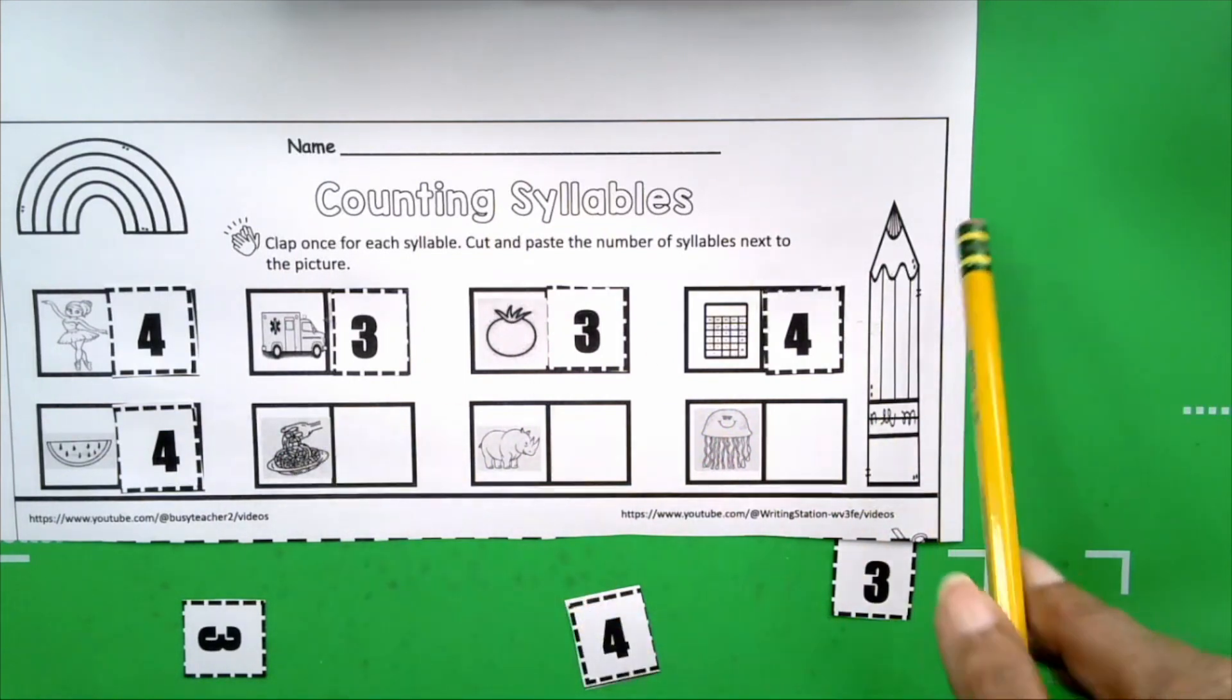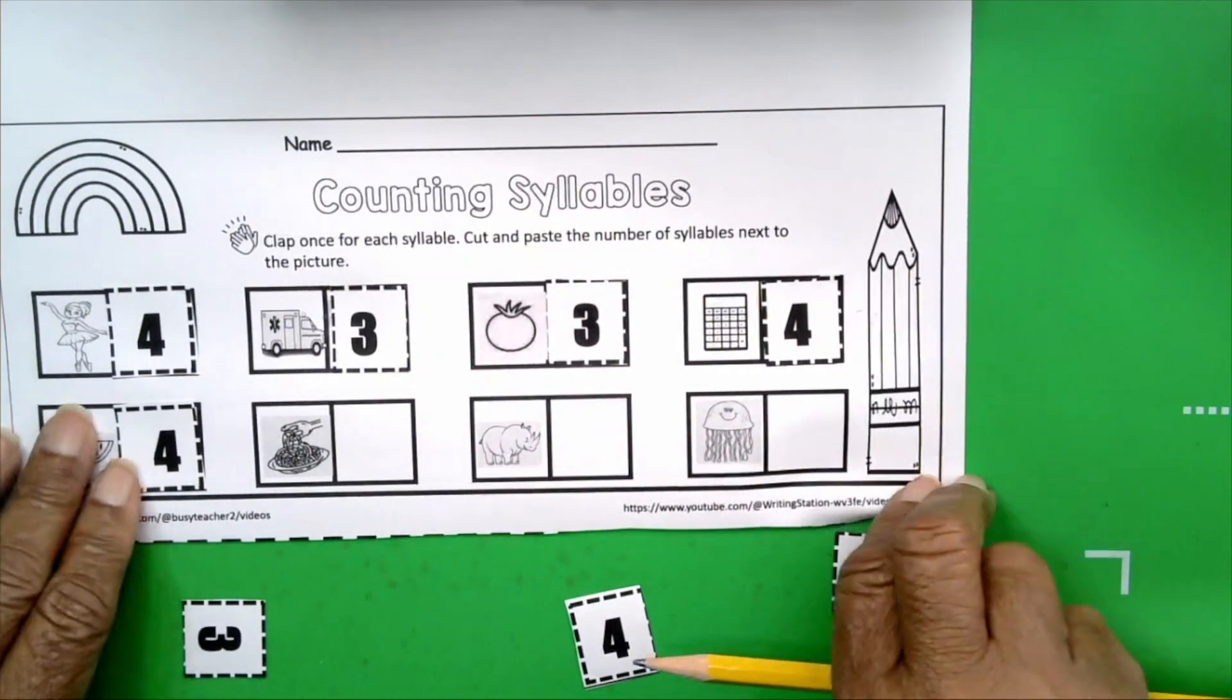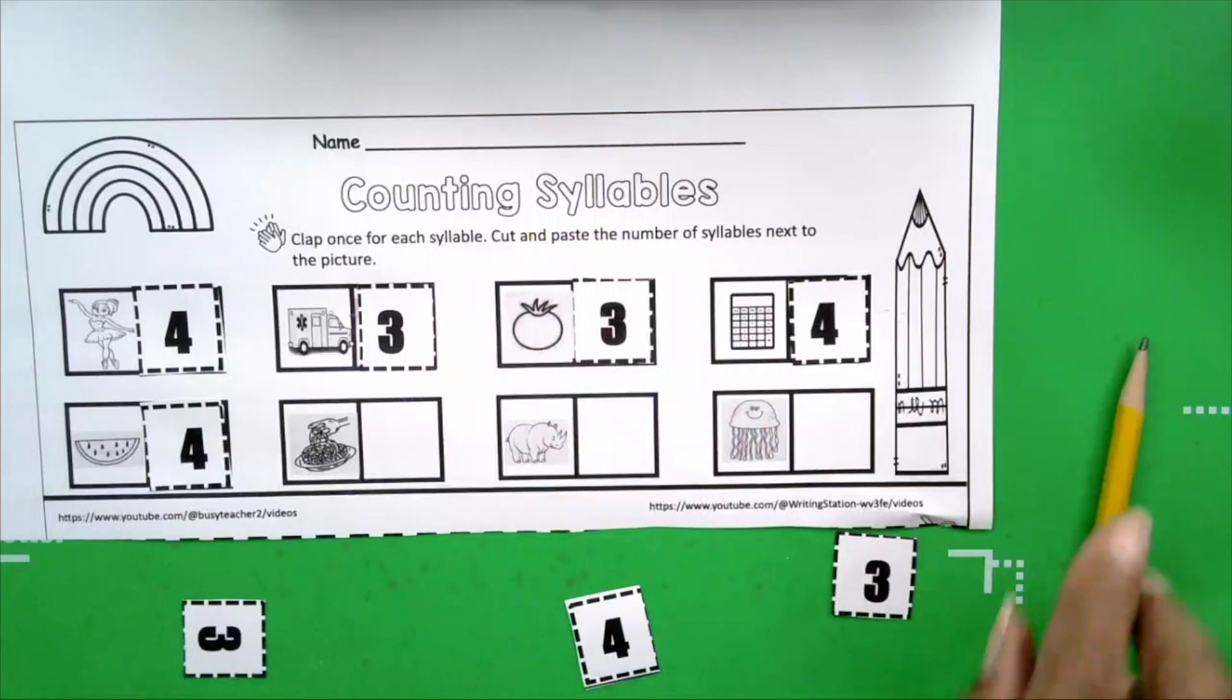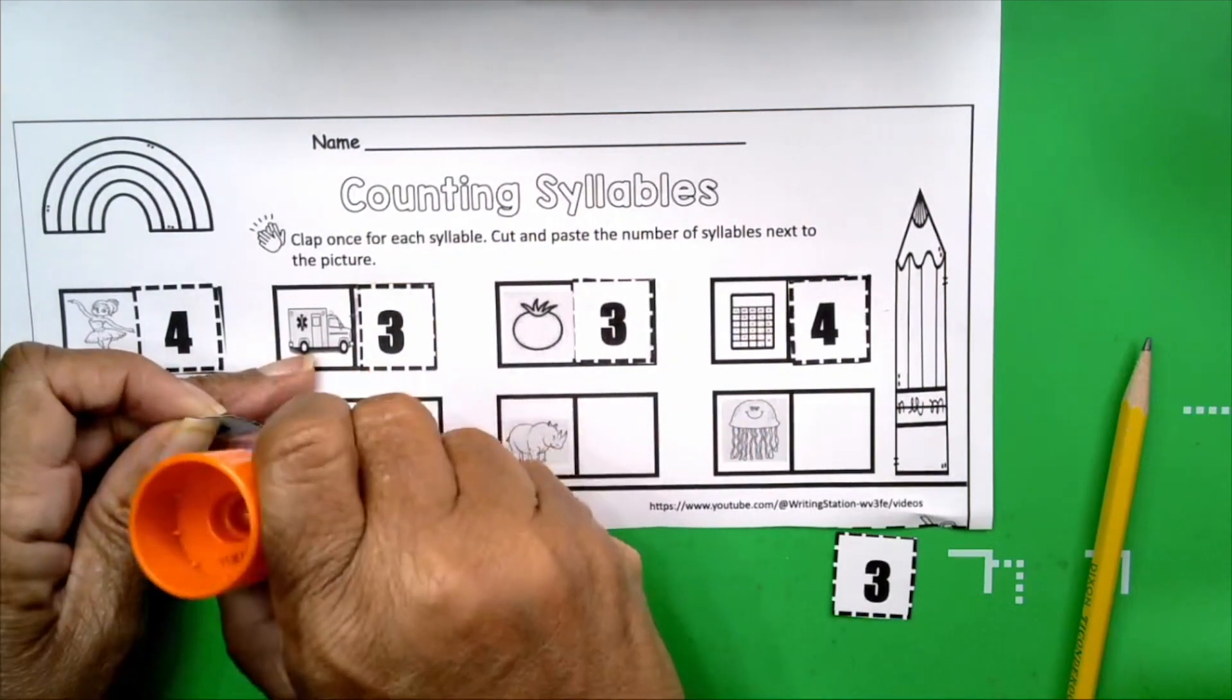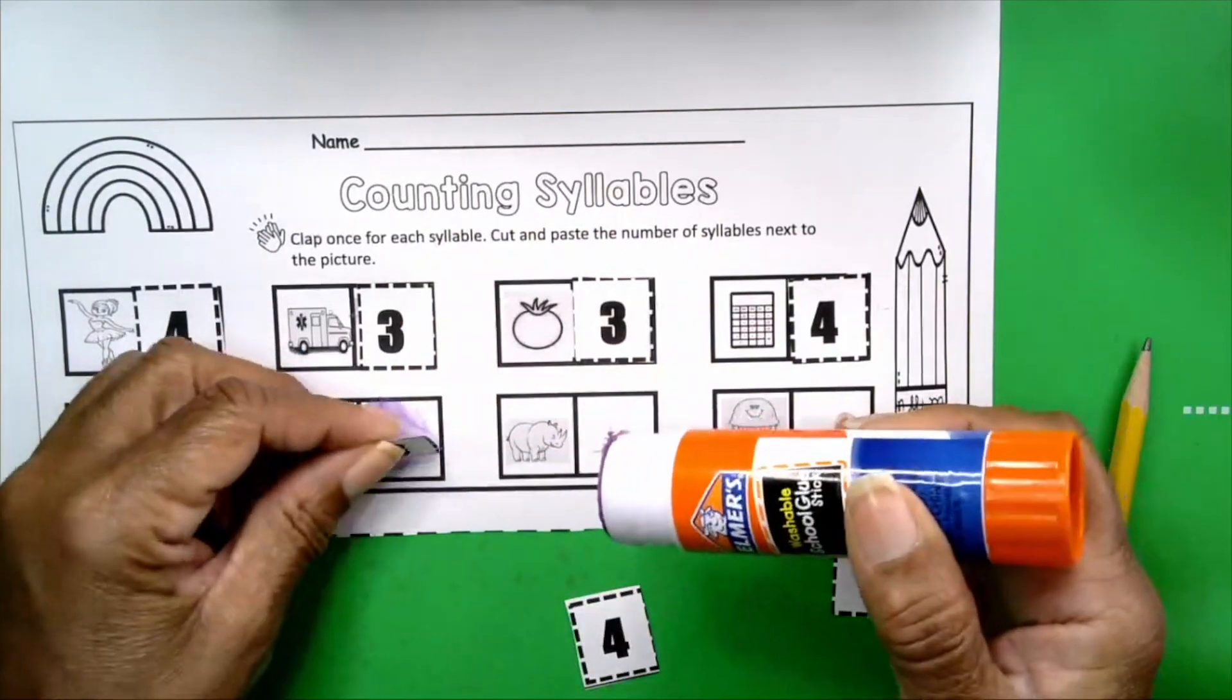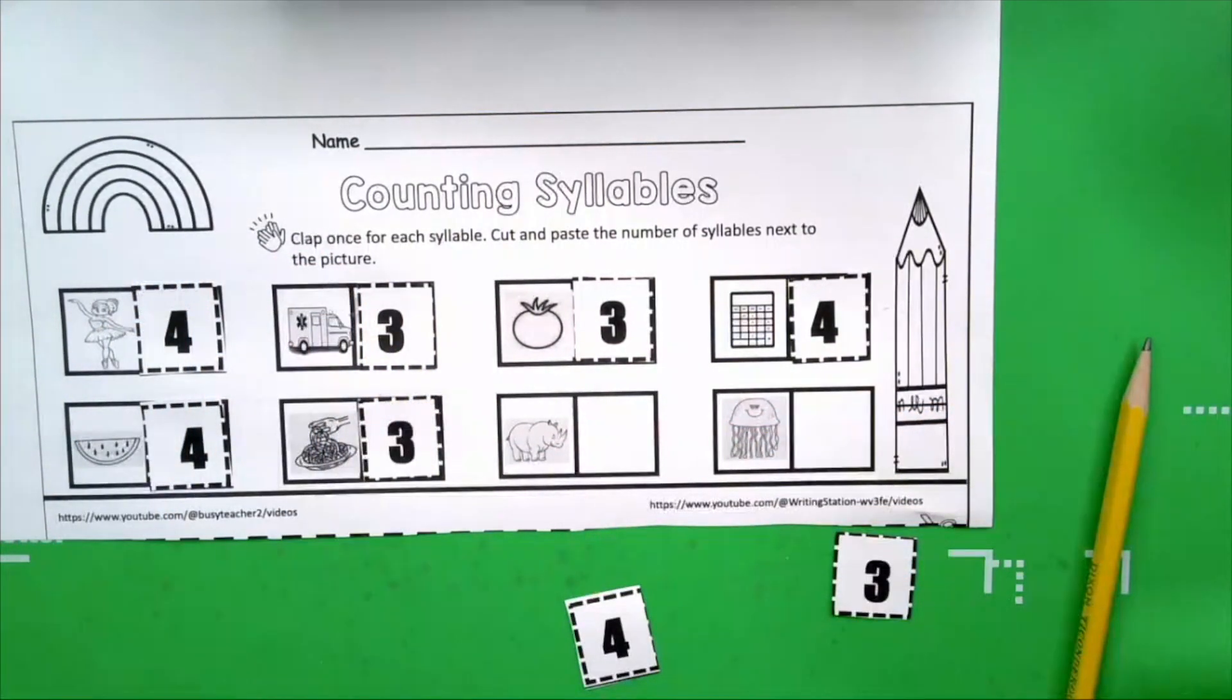Spaghetti. How many of you like spaghetti? I do too. Get your hands ready. Spaghetti. How many claps? Three. How many syllables? Three. Spaghetti.